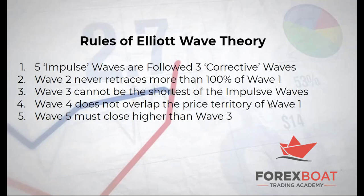Let's cover the key rules we need to understand when breaking down these waves. The first is that within a trend there are five impulse waves that you will see on the charts, followed by what we call three corrective waves. These impulse waves are moving in the direction of the overall trend, and they are subsequently followed by three corrective waves that are moving against the trend.